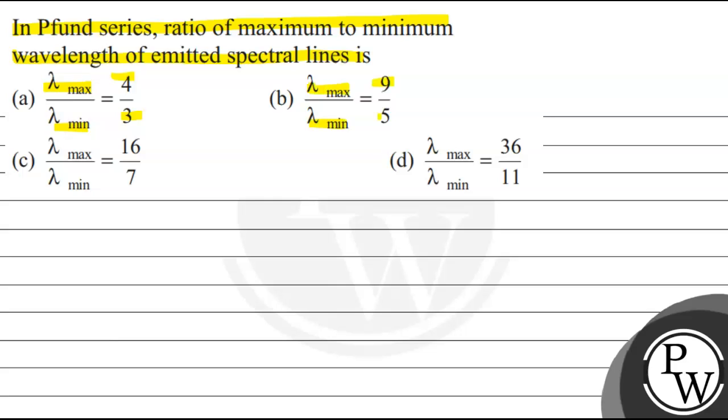Option C: lambda max upon lambda minimum equals 16 upon 7. Option D: lambda max upon lambda minimum equals 36 upon 11.